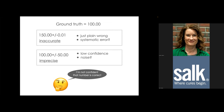Noise is generally the problem we need to address when it comes to imprecision. Imprecision is really tricky in biology because your ground truth is rarely a fixed value — there's going to be some variation that is actually there in the biology. Understanding the fundamentals of microscopy lets you parse out what is noise and what is actual biological variation.